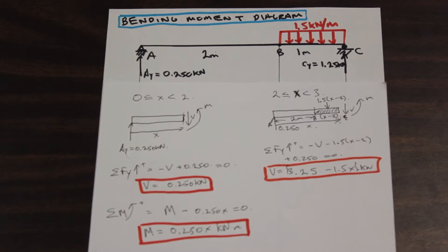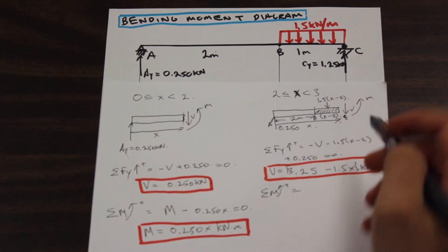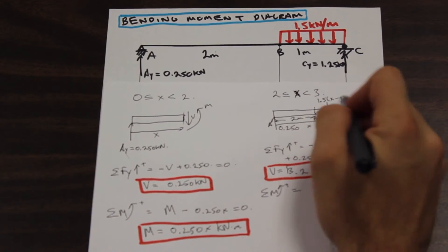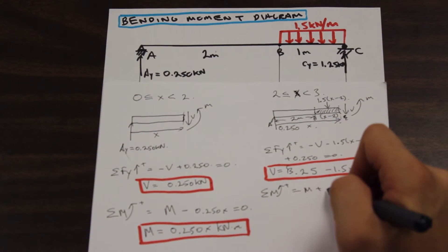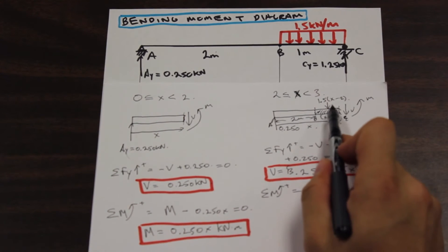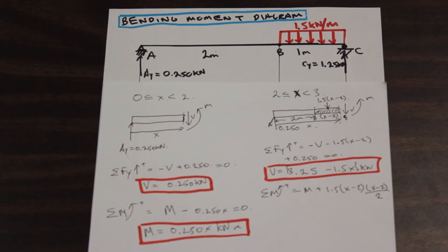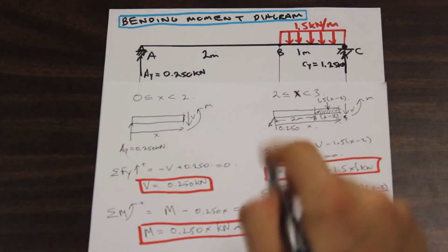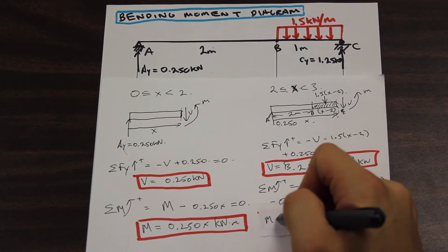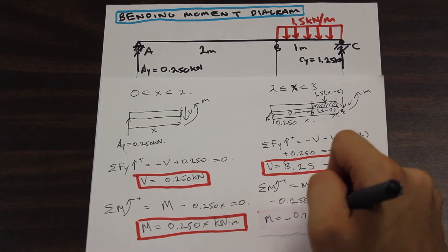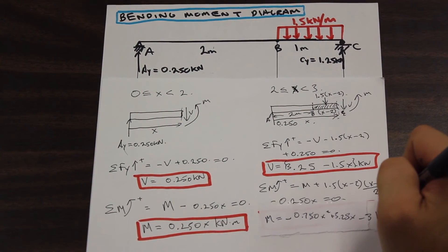Let's do the moment as well. Moment counterclockwise is positive. Starting from the cut point, we have M plus the distributed load resultant: 1.5 times (X minus 2) times the distance (X minus 2) over 2, acting in the positive direction. Then we subtract 0.250X for the Ay force acting clockwise, and set it equal to zero. Solving for M, we get M equal to 0.750X squared plus 3.25X minus 3 kilonewton meters.